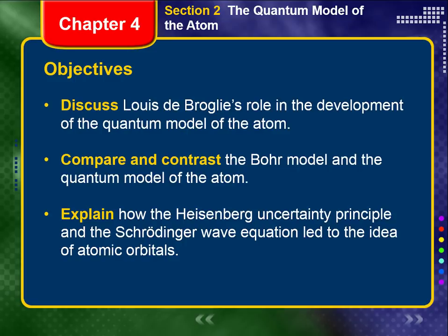So in this section, moving on to the quantum model of the atom, I want you to be able to discuss Louis de Broglie's role in the development of the quantum model. I want you to be able to compare and contrast the Bohr model with the quantum model, and explain how the Heisenberg uncertainty principle and the Schrödinger wave equation led to the idea of atomic orbitals. Notice that's no longer the word orbits — that's the quantum orbital.